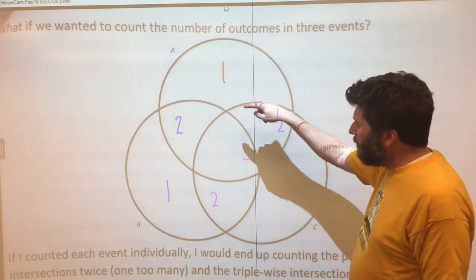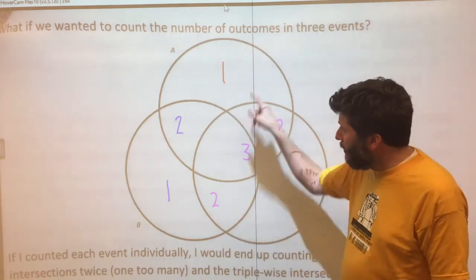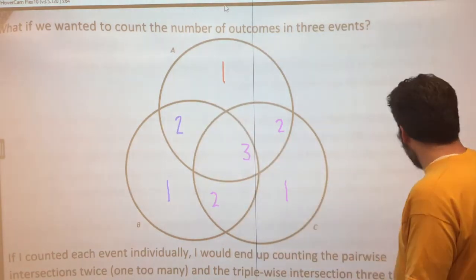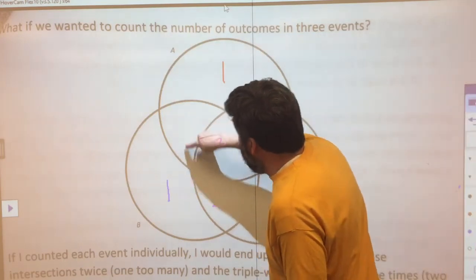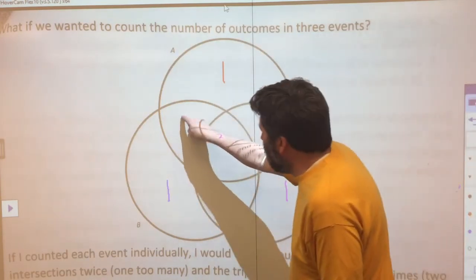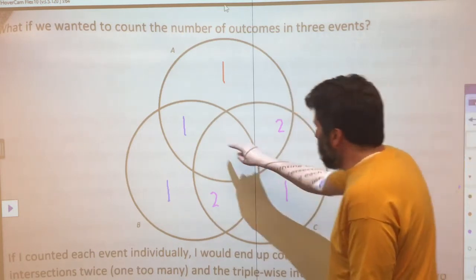I'll start by subtracting away one time everything that shows up in both A and B. We're looking for the overlap for those. That's going to bring this down to a one and that's going to bring this down to a two.